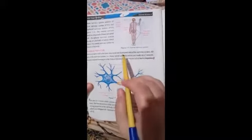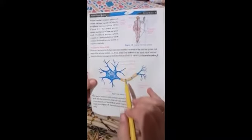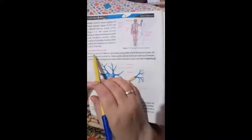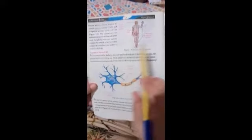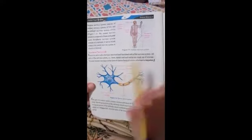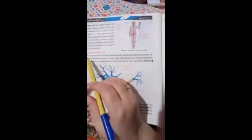To answer this question, you have to draw a line in the middle of the page and give heading of neuron or nerve cell on one side and nerve on the other side.